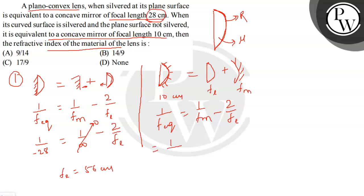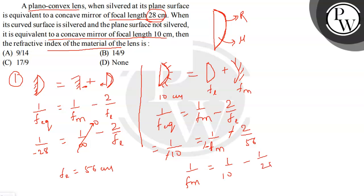Substituting f_L = 56 cm and cancelling the minus signs: 1/f_m = 1/10 − 2/56 = 1/10 − 1/28. Solving: 1/f_m = (28 − 10)/(280) = 18/280 = 9/140. Therefore f_m = 140/9 cm.